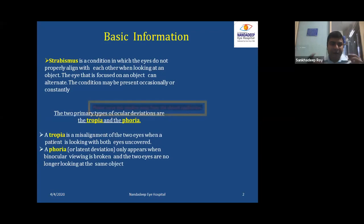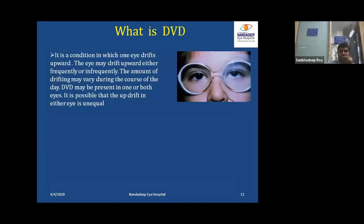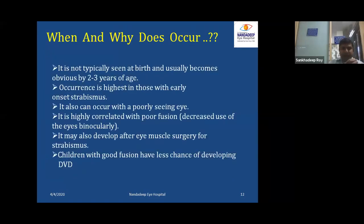Strabismus is nothing but the misalignment of the eyes. There are two types of strabismus: tropia, which is manifested, and phoria, which is latent. Tropia is what you can appreciate from outside, and phoria is what you can appreciate when fusion breaks. It is a condition in which one eye drifts apart, either frequently or infrequently.